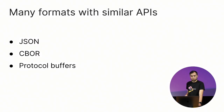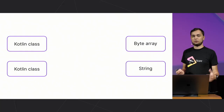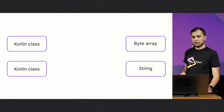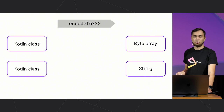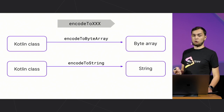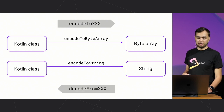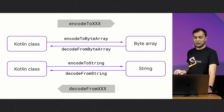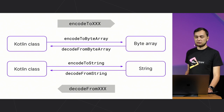Kotlinx Serialization is actually not only a JSON library — it provides a lot of formats and they all have similar APIs. We have CBOR, Protocol Buffers, and other formats including community-contributed ones. They all follow a similar naming convention. If you want to convert your Kotlin class to a byte array or a string or any other entity, all these functions are called encode or encode-to-something. We have encodeToByteArray for Protocol Buffers and encodeToString for JSON. The inverse is decodeFromByteArray and decodeFromString. We try to make all formats follow this naming convention, so no matter what format you use, you'll always know what functions to call.